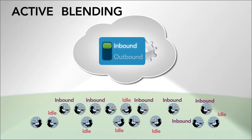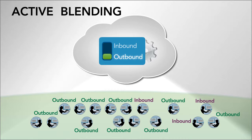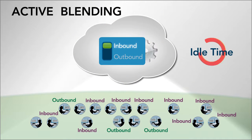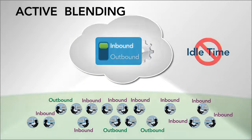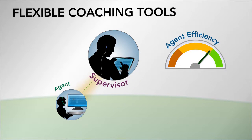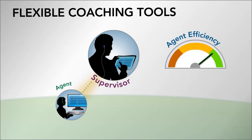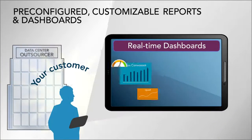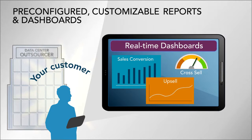With active blending, you're able to switch agents to outbound calling whenever incoming calls slow down. Flexible coaching tools improve performance. Results can be shared with clients in real time.